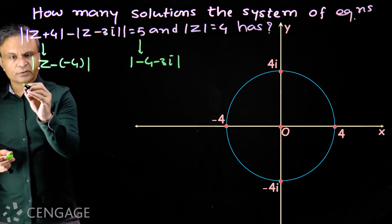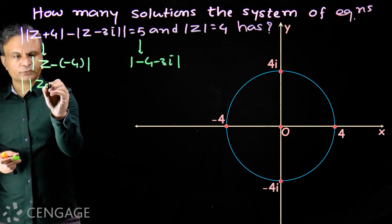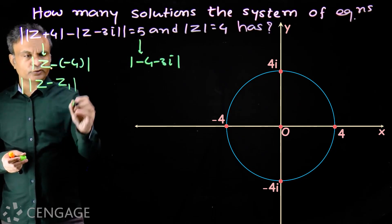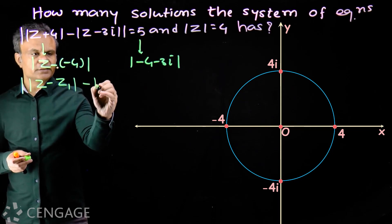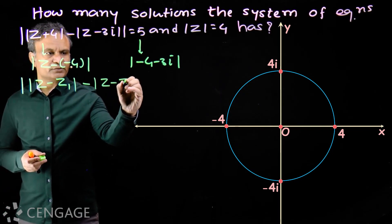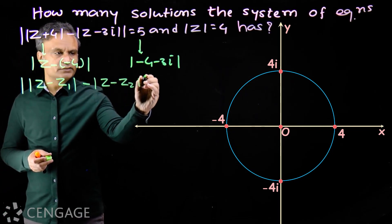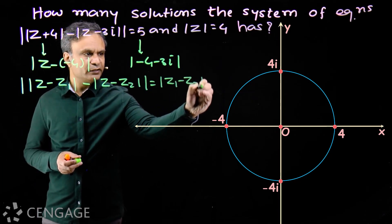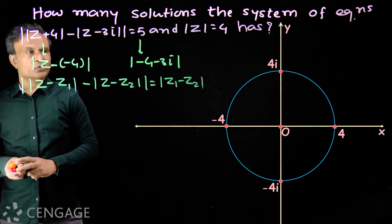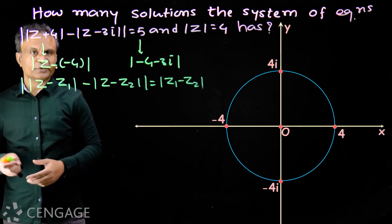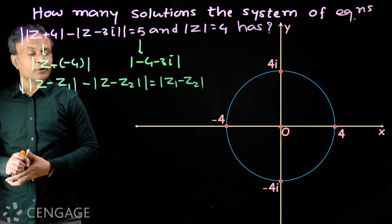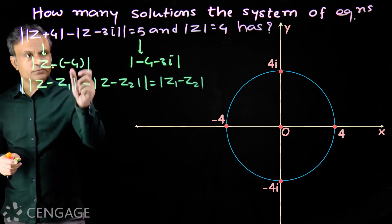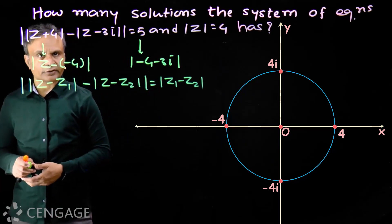We can write 5 as the modulus of minus 4 minus 3i. So we have an equation of the form: modulus of (modulus of z minus z₁) minus (modulus of z minus z₂) equals modulus of z₁ minus z₂. Then the locus of z will be two rays emanating from the complex numbers minus 4 and 3i.